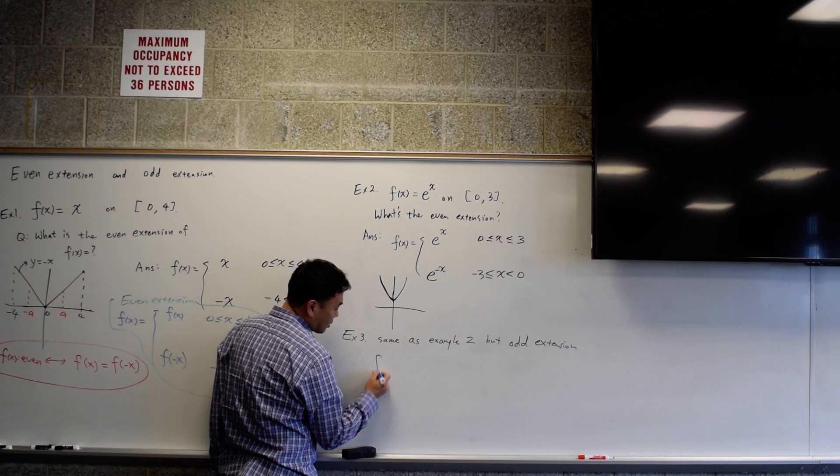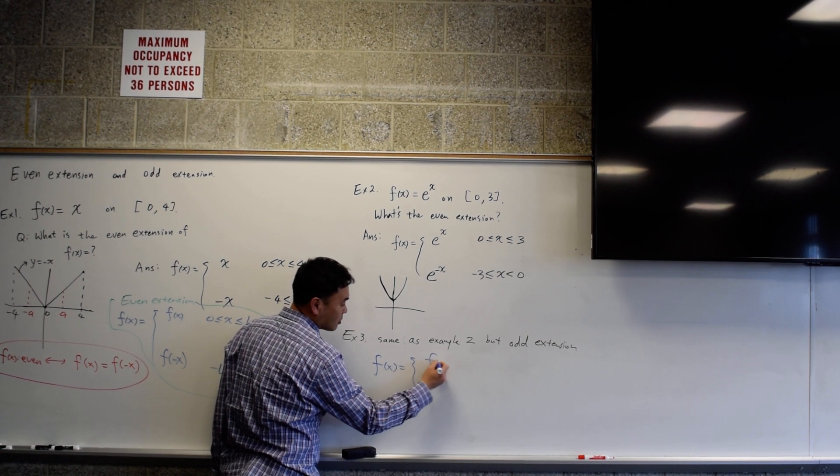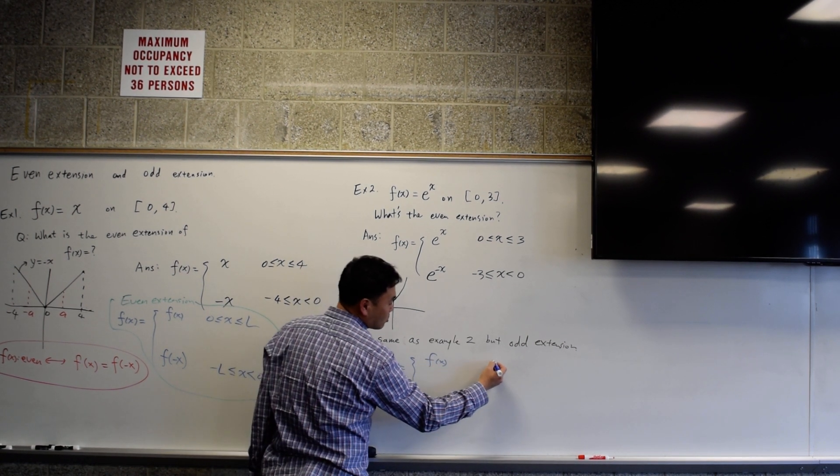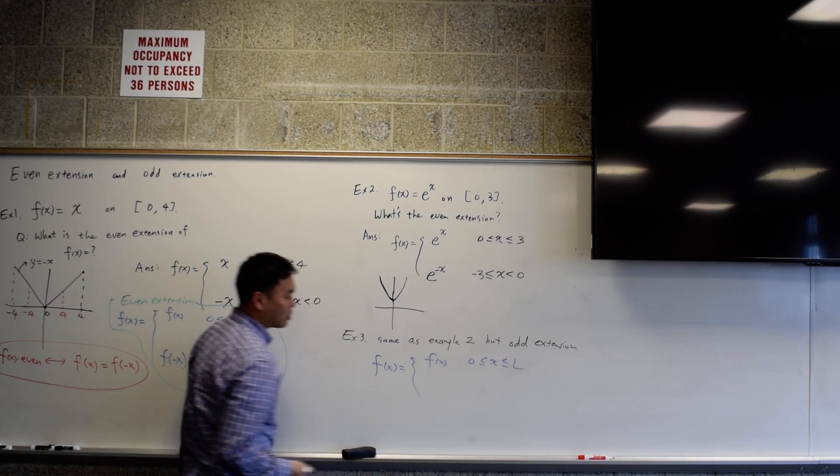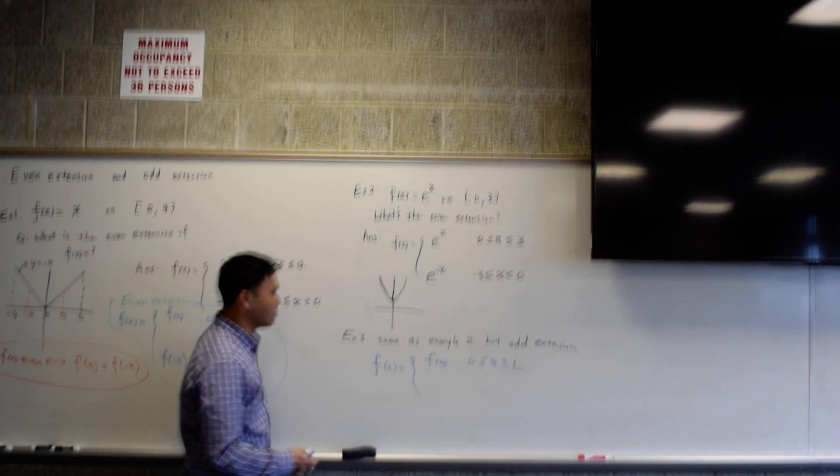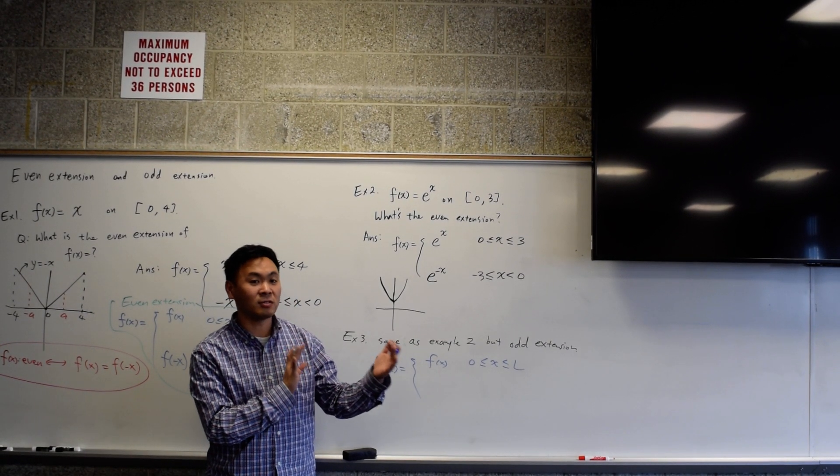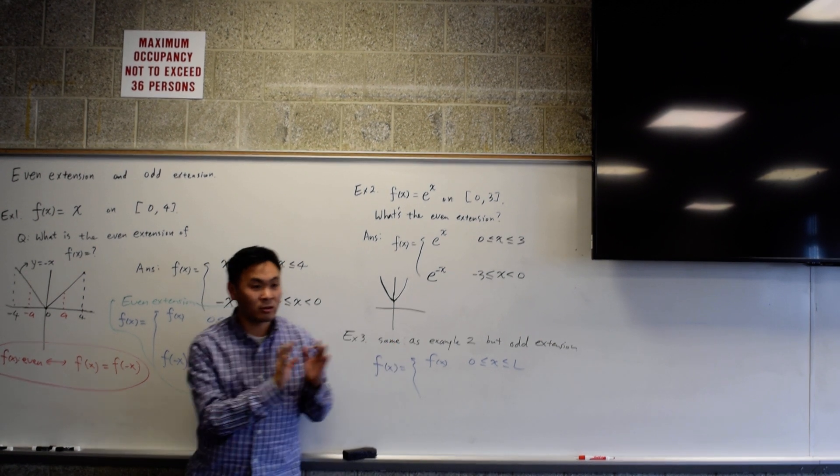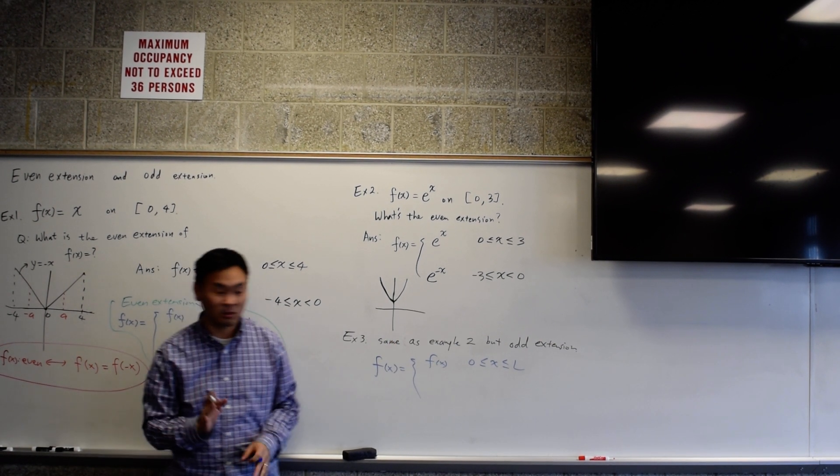The way you take a function and do an odd extension is when you take the function and you don't do anything when it's already positive. You should agree with the original one. Because the extension of a function means you already have something that's defined, and you only want to add some more information to the other side so that it possesses certain symmetry.